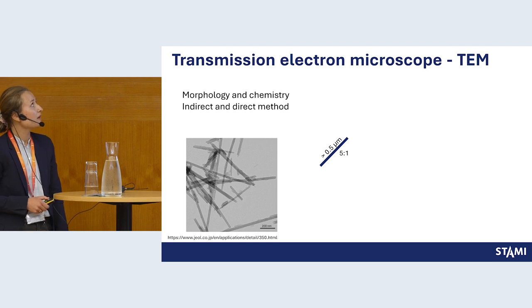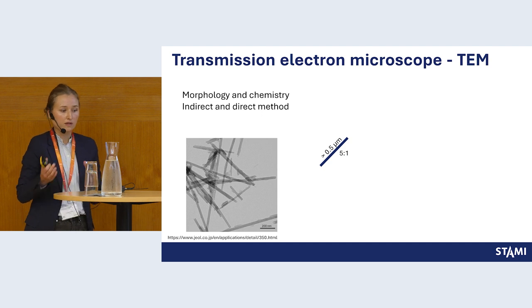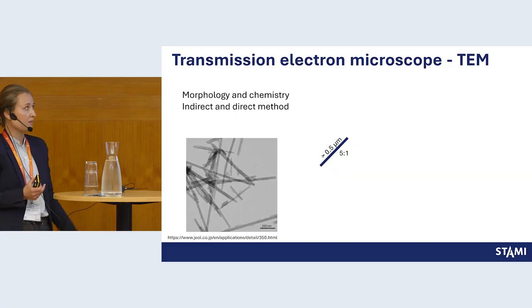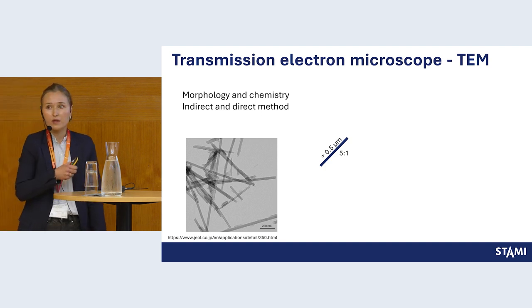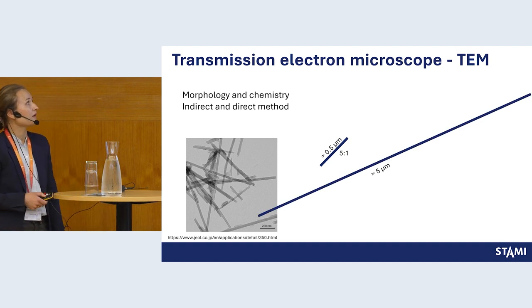The transmission electron microscope also gives you morphology and chemistry, and additionally the crystalline structure. There are indirect and direct methods: in the indirect method, you disperse the material on the filter, and you can dilute the sample if there are too many particles. Some TEM methods use a fiber definition that includes much shorter fibers than those counted in PCM. However, methods here often also specify counting PCM-equivalent fibers so that results are comparable.